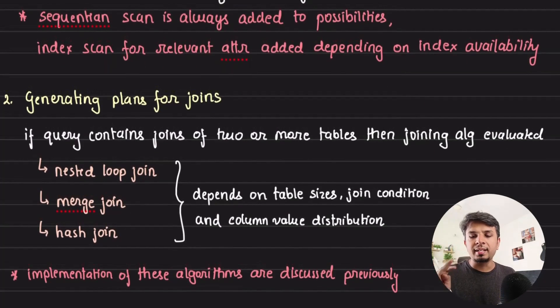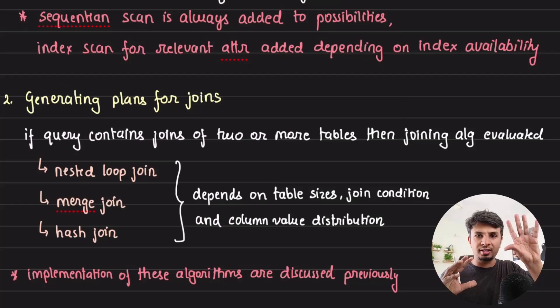The second is where the joins would come in—the most critical part. There are three algorithms through which two tables are joined by the database engine: nested loop join, merge join, and hash join. In the previous video, I've talked about it in detail. We'll not go into the implementation of these algorithms in this one. Assume that there are three algorithms through which two tables are joined.